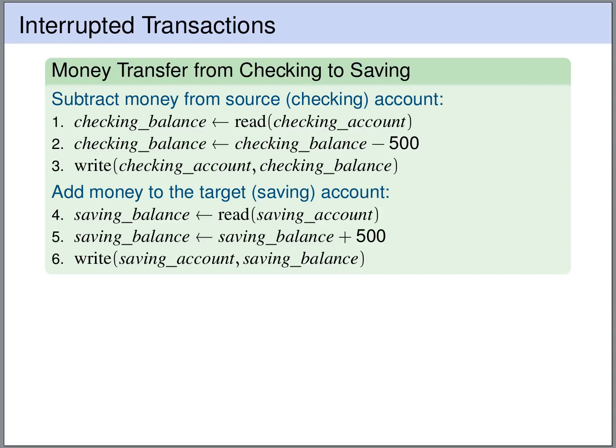Now let's say we want to transfer 500 euros from our checkings to our savings account. This transaction proceeds in the following steps. First the transaction reads the balance on the checkings account, decreases the balance by 500, updates the balance on the checkings account — so now it's 500 euros less. Then it reads the balance on the savings account, increases the balance by 500, and writes the new balance back to the savings account. If everything runs through smoothly then the checking account has 500 euros less and the savings account has 500 euros more.